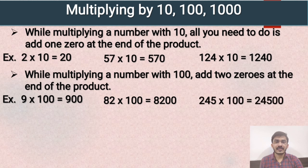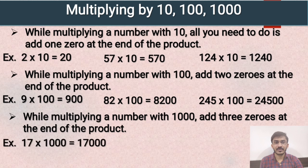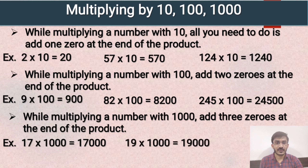Third example: 245 multiplied by 100 — 245 ones are 245, and we add two zeros at the end of the product. Next rule: while multiplying a number with 1000, add three zeros at the end of the product. For example, 17 multiplied by 1000 — 17 ones are 17, and we add three zeros. So the answer will be 17000. Next example: 19 multiplied by 1000 — the answer will be 19000.